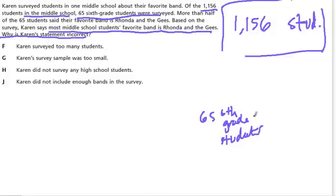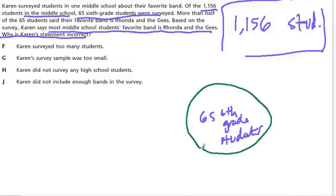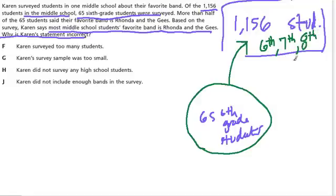Let's think about what she was doing. She was saying, if I ask this small group of sixth graders what band they like, that'll give me a really good idea of what all 1,156 middle school students — which includes sixth, seventh, and eighth grade students — like. That's the goal in a survey, because you don't want to ask everybody, but you want to find a representative group, a group that represents everybody.